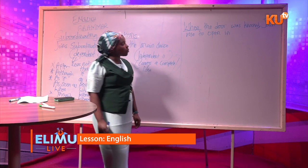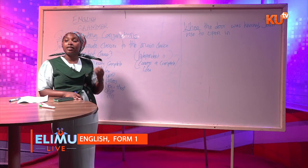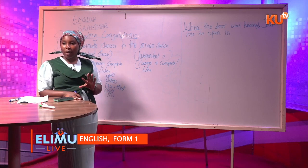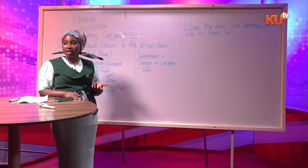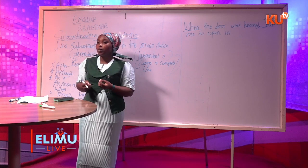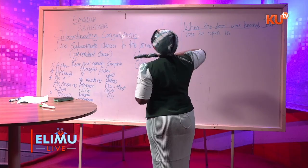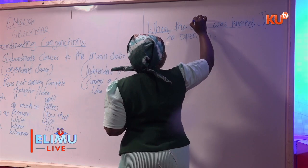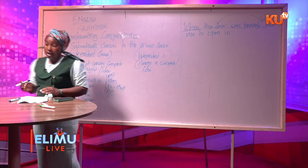If I say 'when the door was knocked' and stop there, the sentence is hanging. But if I say 'Joan rose to open it,' you understand that sentence. So 'when the door was knocked' is the subordinate clause, joined to the main clause 'Joan rose to open it.'